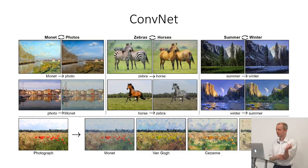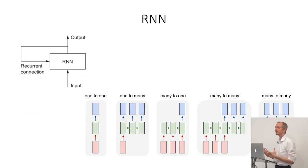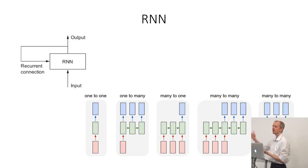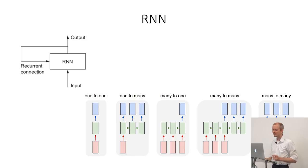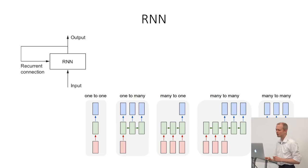The last architecture to briefly overview is the RNN — recurrent neural network. These are things like, in your iPhone as you're typing, it is predicting the next word you might be typing. What you do is feed the input back into itself — it's kind of like a feedback loop. There's more than one way to organize these things: one to one, one to many, and so on.